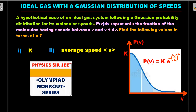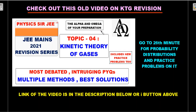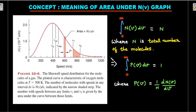Let's start with the basic understanding of the probability distribution curve. You can refer to an old KTG video from the JEE Mains revision series around January-February at the 26th minute for an elaborate explanation of probability distribution curves, along with some practice problems. The link is in the description below. For now, here's the gist: whenever you are given an N(v) versus v graph — a standard Maxwellian or Maxwell-Boltzmann distribution — a small area N(v)dv indicates the number of molecules having speeds between v and v+dv.